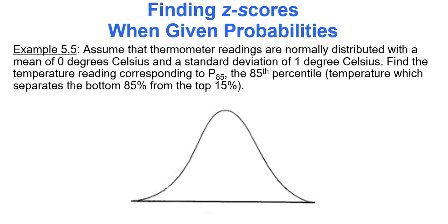Assume the thermometer readings are normally distributed with a mean of 0 degrees Celsius and a standard deviation of 1 degree Celsius. Find the temperature reading corresponding to P85, that means the 85th percentile. It's the temperature which separates the bottom 85 percent from the top 15 percent. So think about your picture. I have zero right in the middle, that's my mean, and I'm looking for the data value that separates the bottom 85 percent from the top 15 percent. So I'm looking for the z-score or the data value that has an area to the left of 0.85 and an area to the right of 0.15.